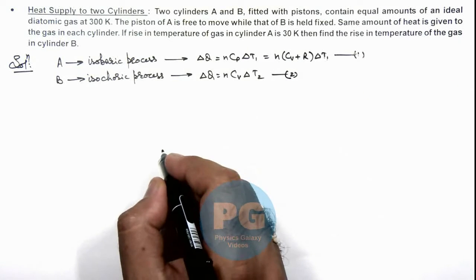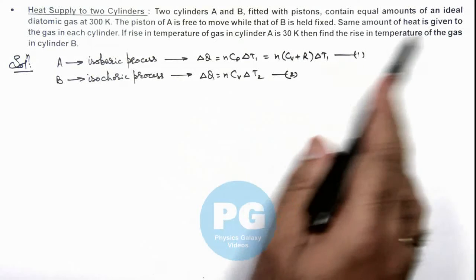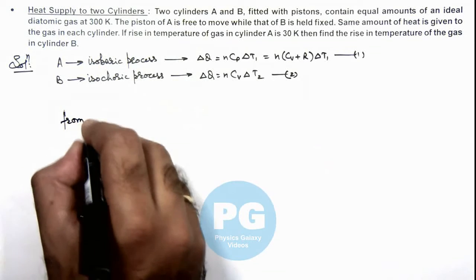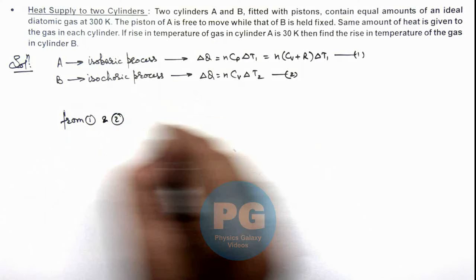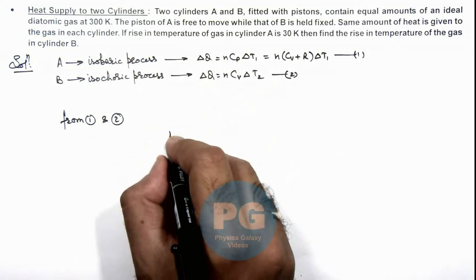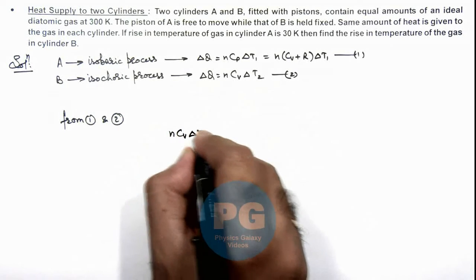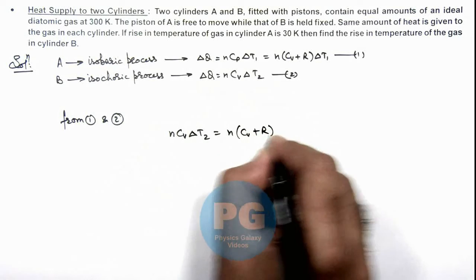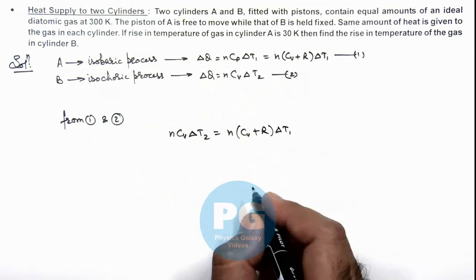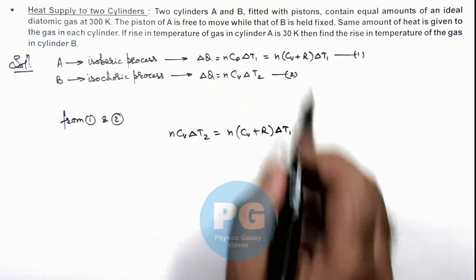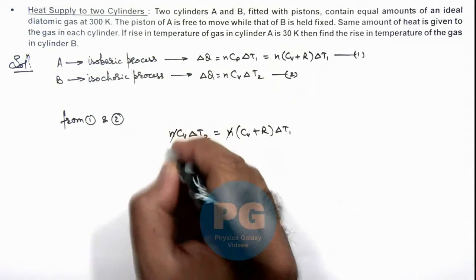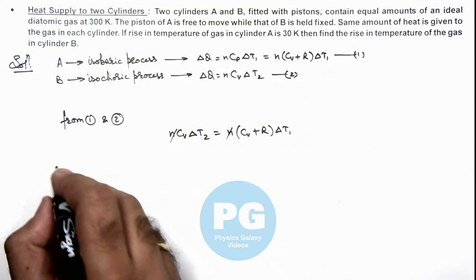Here we are given that equal amount of heat is supplied to the two gases, then we can write from equations 1 and 2, as ΔQ are equal, nCvΔT₂ equals n(Cv + R)ΔT₁. We are already given that ΔT₁ is 30 Kelvin, so here n gets cancelled out. And we can write for diatomic gas...